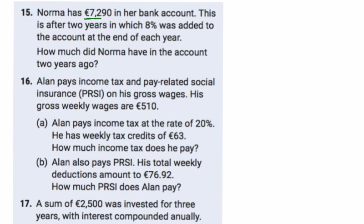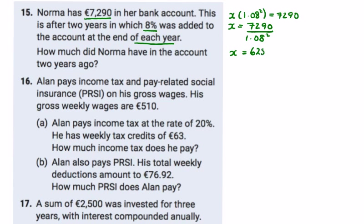Question 15: Norma has €7,290 in her bank after two years, during which eight percent was added at the end of each year. So x — the amount she invested — multiplied by 1.08 to the power of two equals €7,290. If you practise these questions they'll be easy; working backwards without practice is very hard. The amount she would have invested to get €7,290 after two years at eight percent works out to be €6,250.